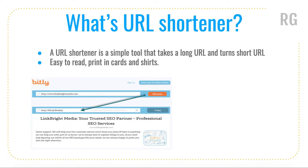A URL shortener is a simple tool that takes a long URL and turns it into a short URL. It is used because it is very simple and easy to read, and it is used to print on cards and t-shirts.